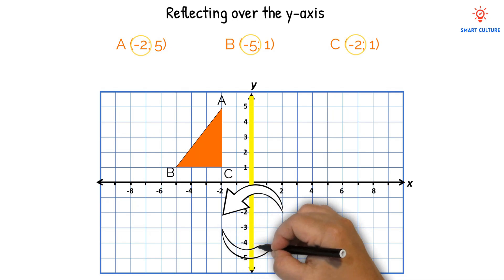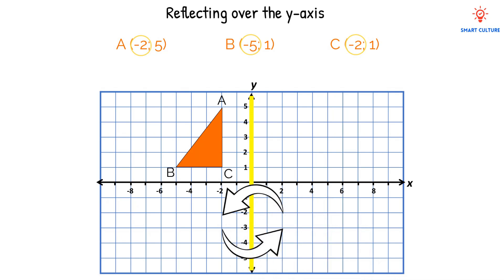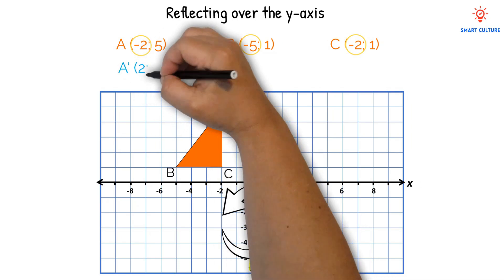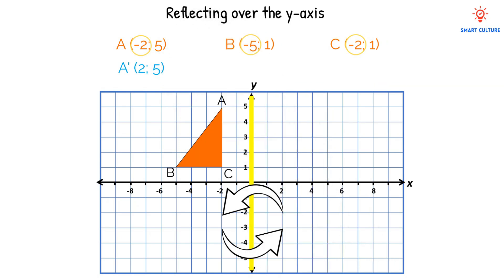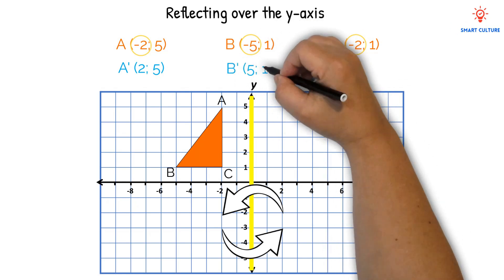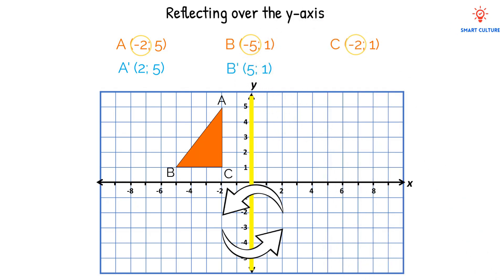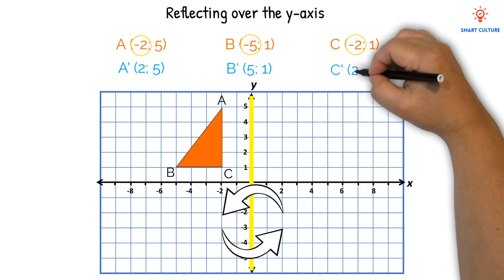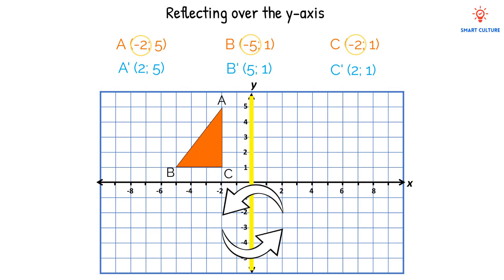So let's first write the coordinates for this reflected triangle. Therefore, A will become A': 2 and 5. We change the x-value of negative 2 to its opposite, which is positive 2. B will become B': 5 and 1. C will become C': 2 and 1.